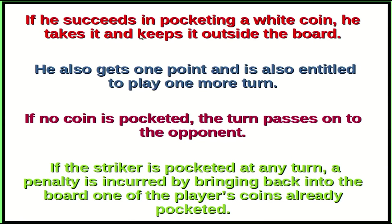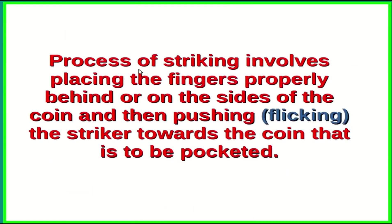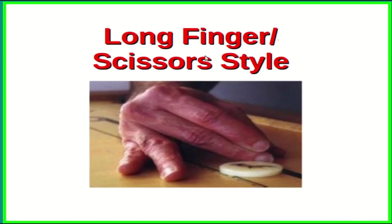If the striker succeeds in pocketing a white coin, he takes it, keeps it outside the board, gets one point, and is entitled to continue the play — meaning he gets one more turn. If no coin is pocketed, the turn automatically passes to the opponent. If the striker is pocketed at any turn, a penalty is incurred by bringing back into the board one of the player's already-pocketed coins. The process of striking — technically called flicking — involves placing the fingers properly behind or on the sides of the coin and pushing or flicking the striker towards the coin to be pocketed.